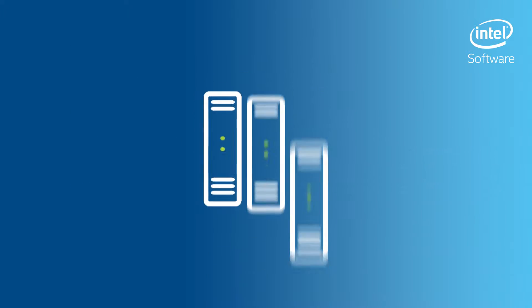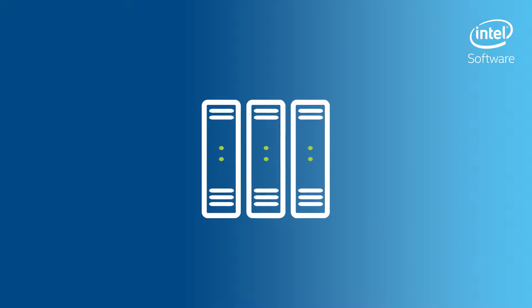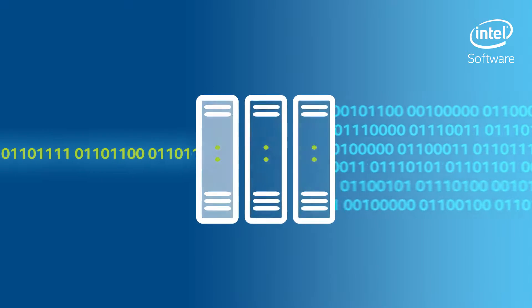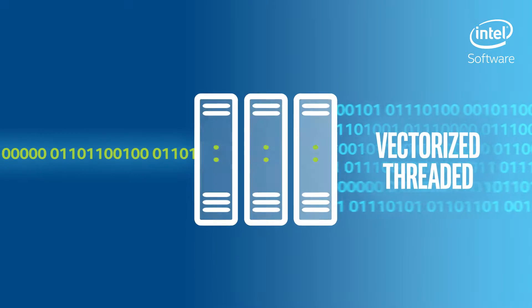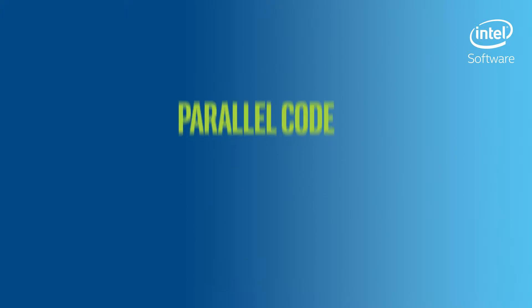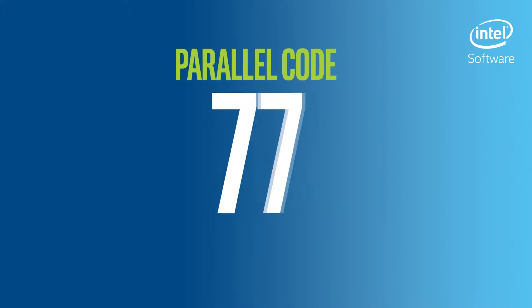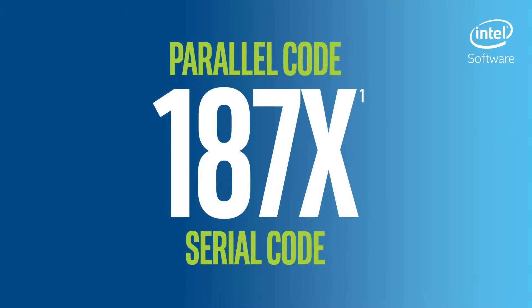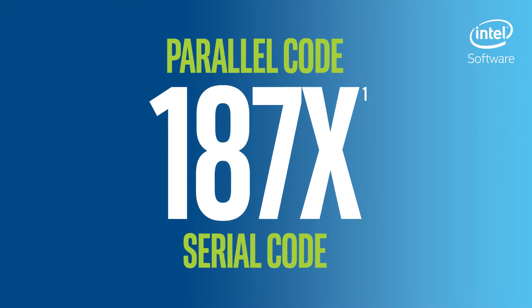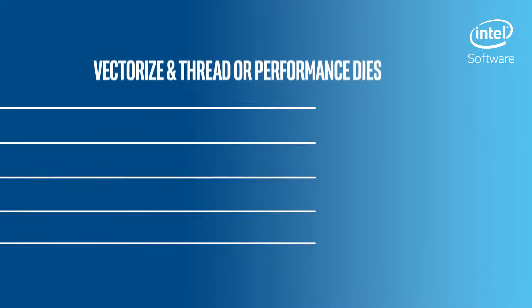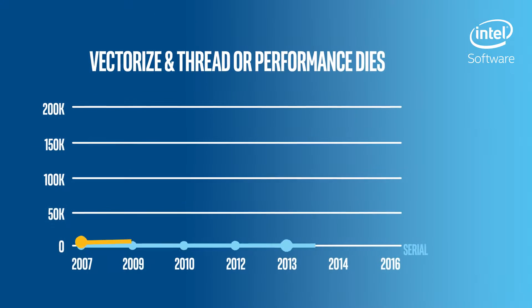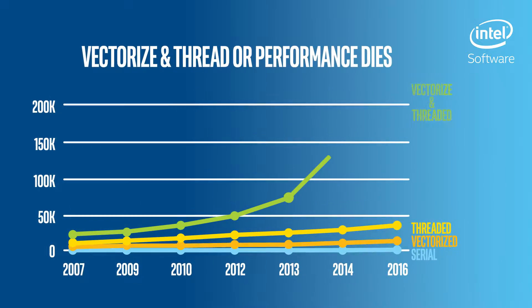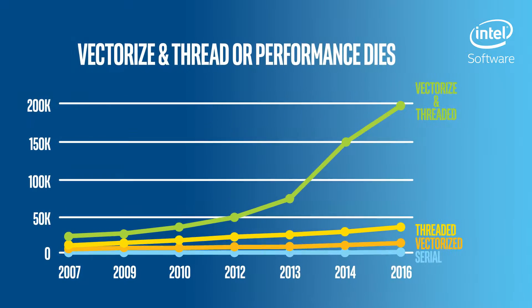But modern processors give their best performance only with parallel code that is both vectorized and threaded, which can run up to 187 times faster than serial code. So how can you take advantage of this performance without getting a degree in parallel programming?